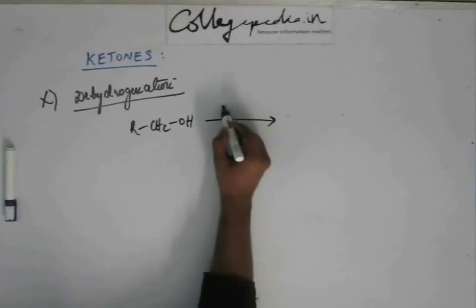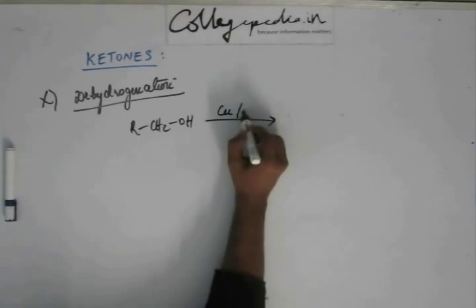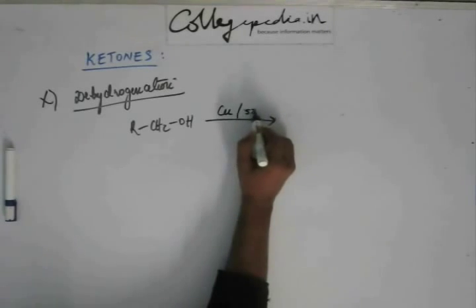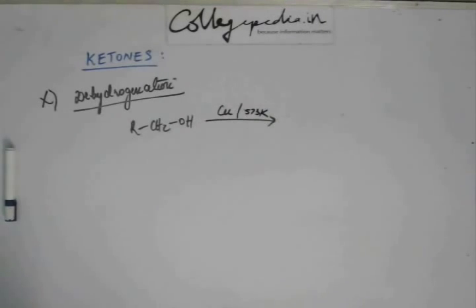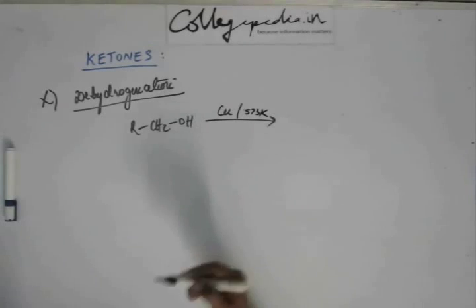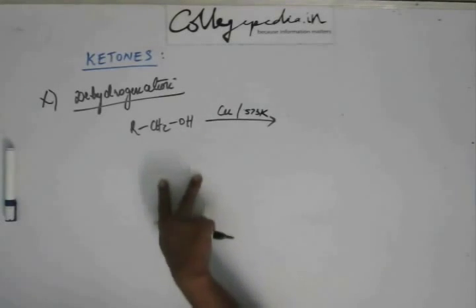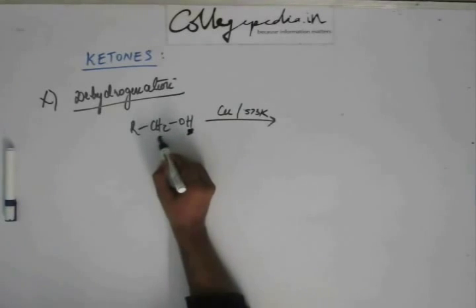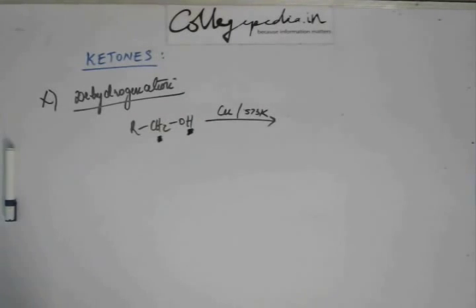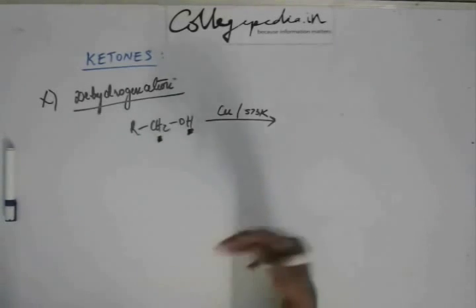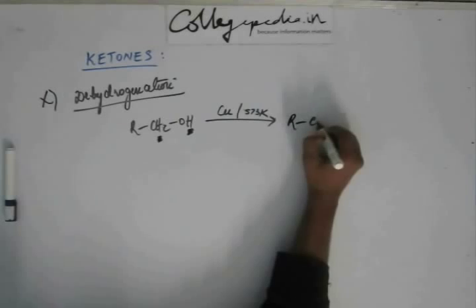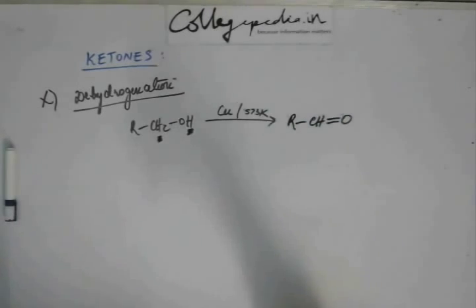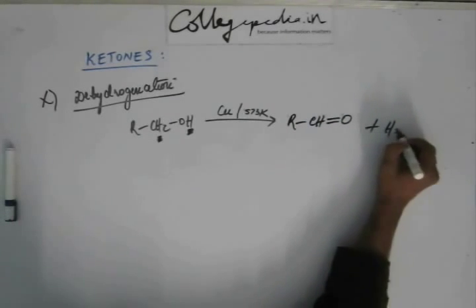When I take a 1° alcohol with copper metal at a temperature around 300°C or 573 Kelvin, hydrogen is removed. One hydrogen from oxygen, one hydrogen from carbon. Both lose one hydrogen and one bond, then they form a bond between themselves and both gain one bond like this, and hydrogen is removed.